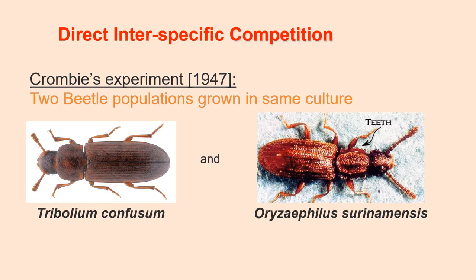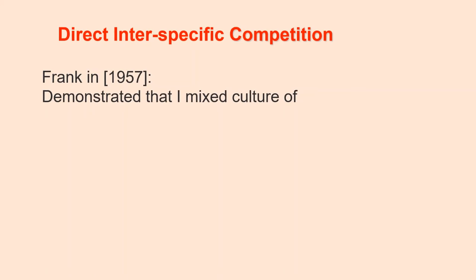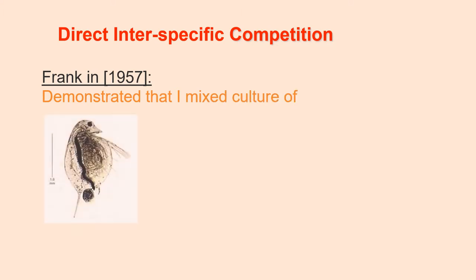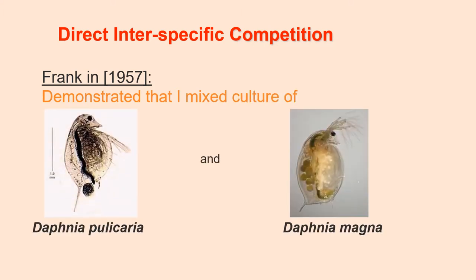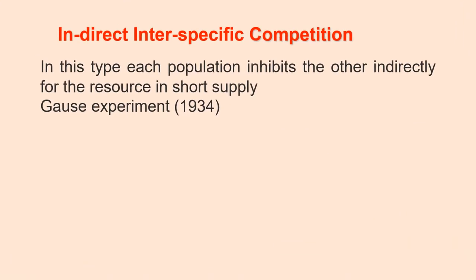In another experiment, Frank in 1957 demonstrated that in mixed cultures, Daphnia pulicaria causes the extinction of Daphnia magna when food and oxygen become limited — so Daphnia magna vanished in the presence of Daphnia pulicaria. In these two examples, the competition is of the direct interspecific type. The second type is indirect interspecific competition, in which each population inhibits the other indirectly for a resource in short supply. This was proved by Gauze in 1934.